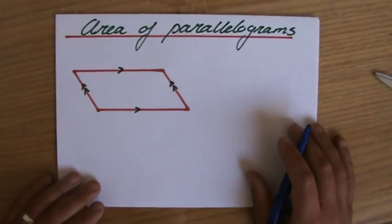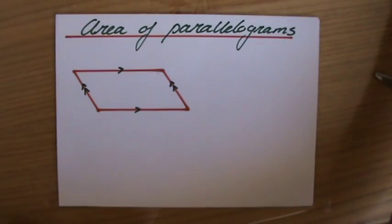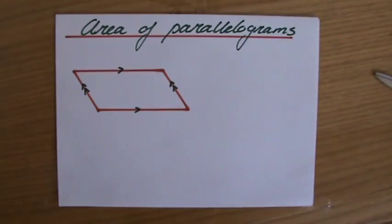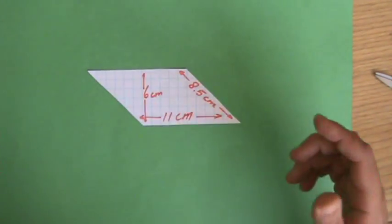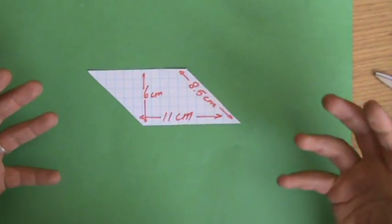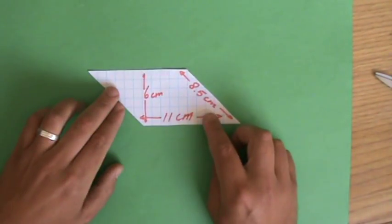Anyway, parallelograms, how do we calculate the area? I'm just going to show you, because the book is going to give you a formula. But why does the formula look the way it does? Because we don't want to apply formulas without thinking. We want to understand what we're doing.